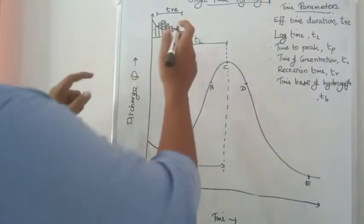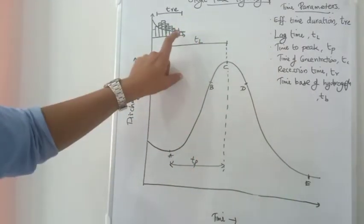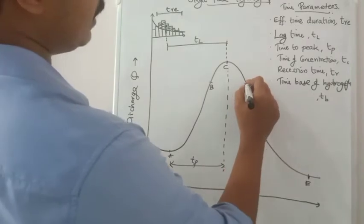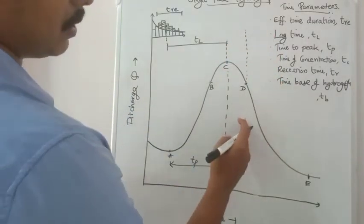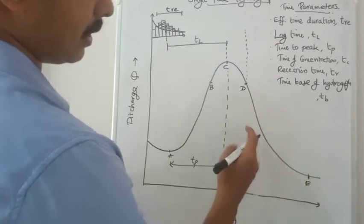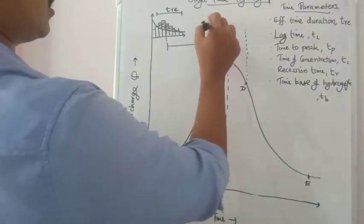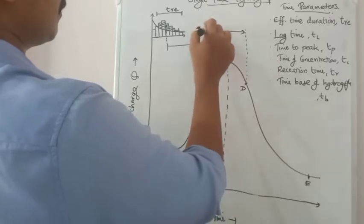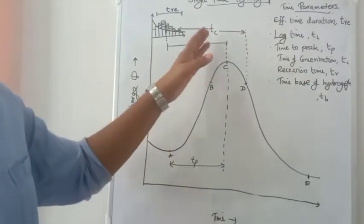The end point of the effective rainfall — the effective rainfall end point — to the recession limb is the time lag. The next parameter is time of concentration, Tc. That is the theory — it is the time duration for which the farthest point of the catchment area can be reached into the source river or stream.